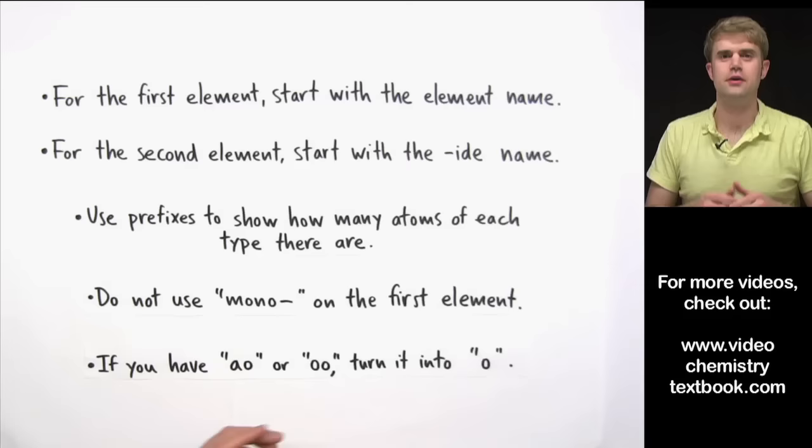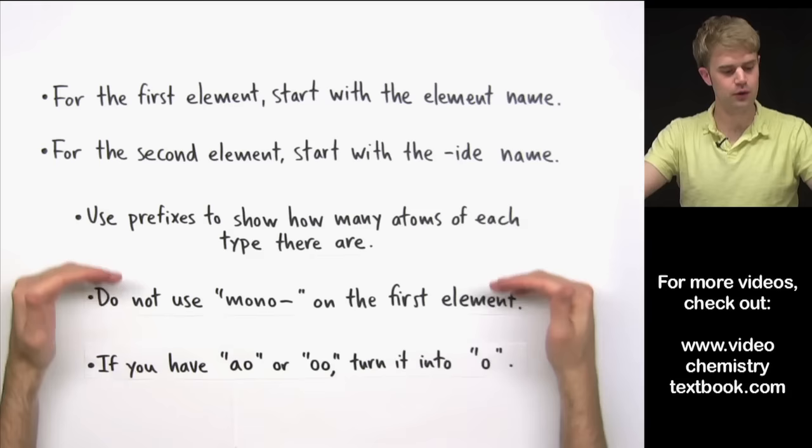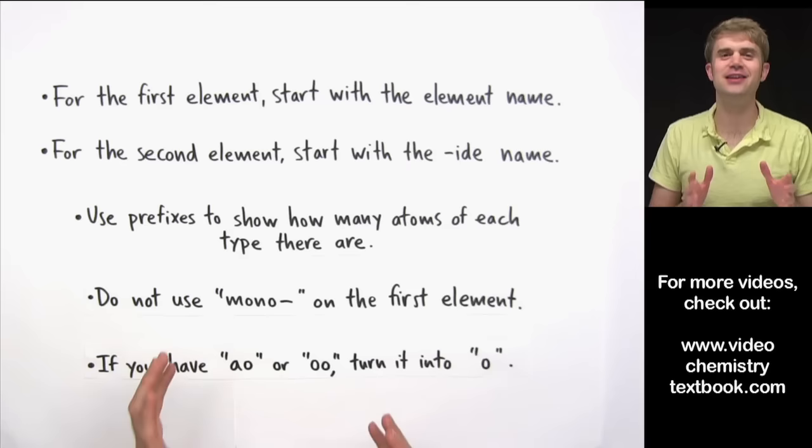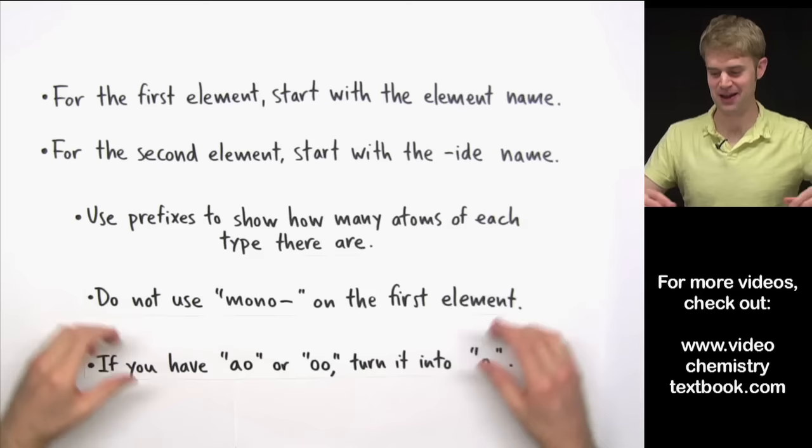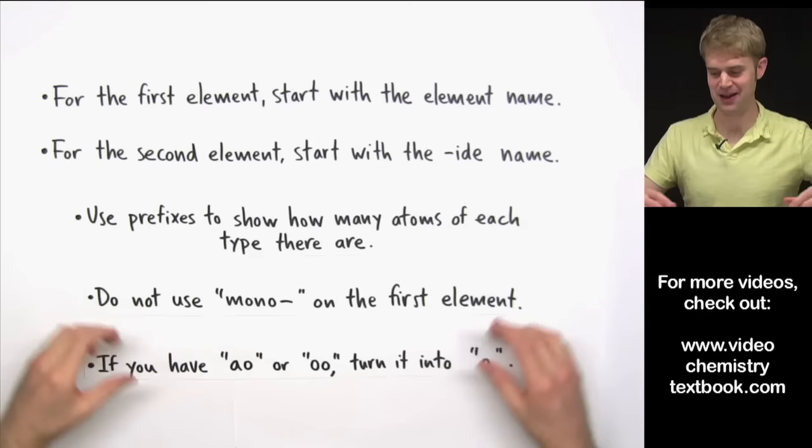Here's how we name covalent or molecular compounds with two nonmetals: just follow these steps. Remember, do not use mono on the first element if there's only one of it. Also, avoid awkward pronunciations — if you get AO or OO, turn it into just O. Keep these things in mind and you should be all set.